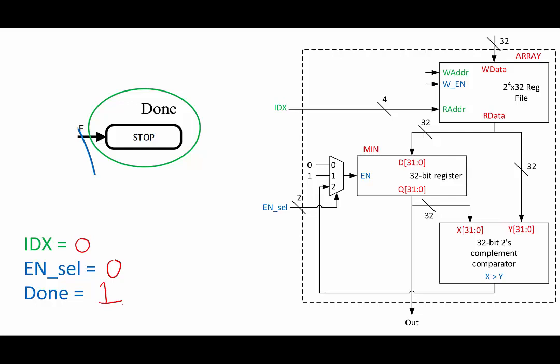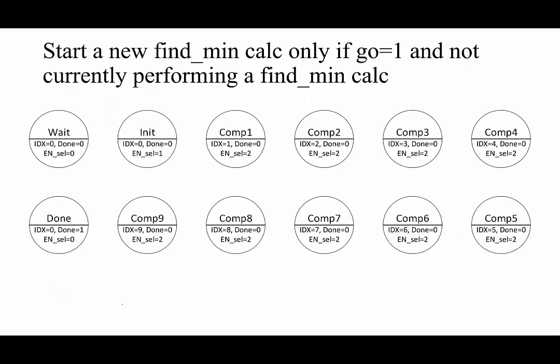Now that we have our final calculations, we can copy these to our finite state diagram. Now that we have our outputs, let's determine our state transitions. Let's go with a simple operation for go and assume that we can only start a new calculation if we are in the done or wait state. If go is one, we initialize our calculation; otherwise, we stay in these waiting states. Once we begin our calculation, we should always progress through each iteration of the loop.